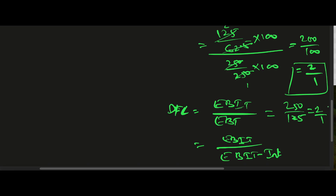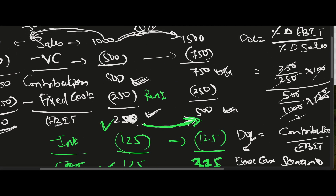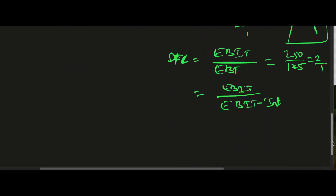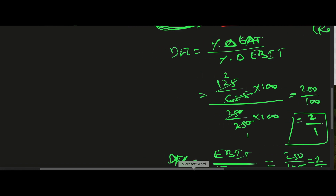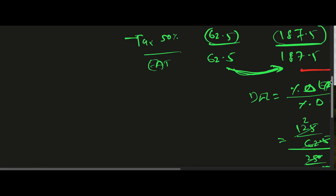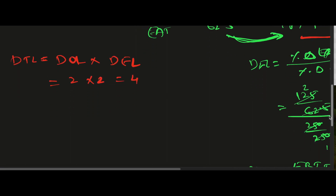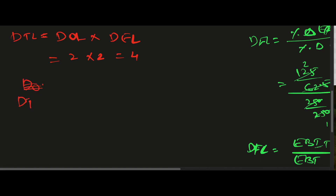From the operating leverage perspective, DOL is 2, and from the financial leverage perspective, DFL is also 2. Degree of Total Leverage equals Degree of Operating Leverage multiplied by Degree of Financing Leverage, which is 2 × 2 = 4. Degree of Total Leverage tells you the percentage change in Earning After Tax (net profit) based on percentage change in sales.